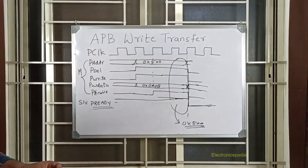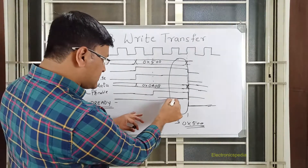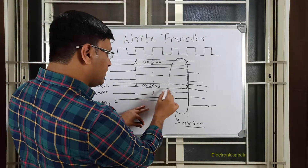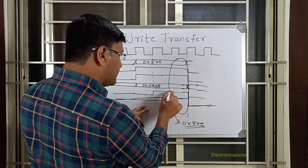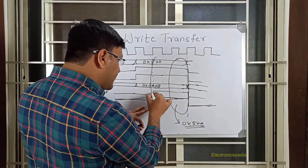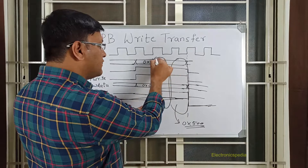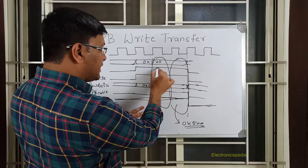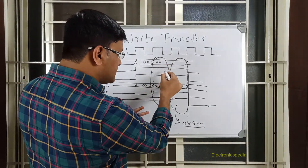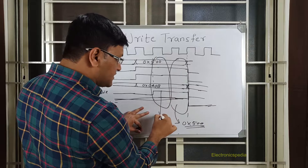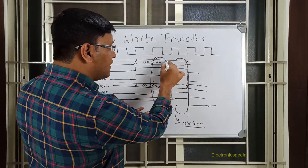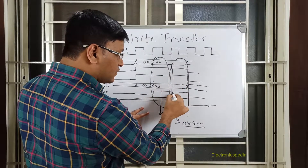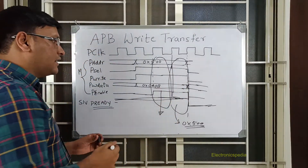In that case, as soon as PENABLE is high, PREADY is also high in that same window. Since PREADY is high, PENABLE is high, PSEL is high, and PWRITE is high, the transaction ends there itself — it is accepted as a valid transaction. So in the next clock cycle, PSEL and PENABLE should all go low, meaning there is no wait cycle and the transaction immediately ends.